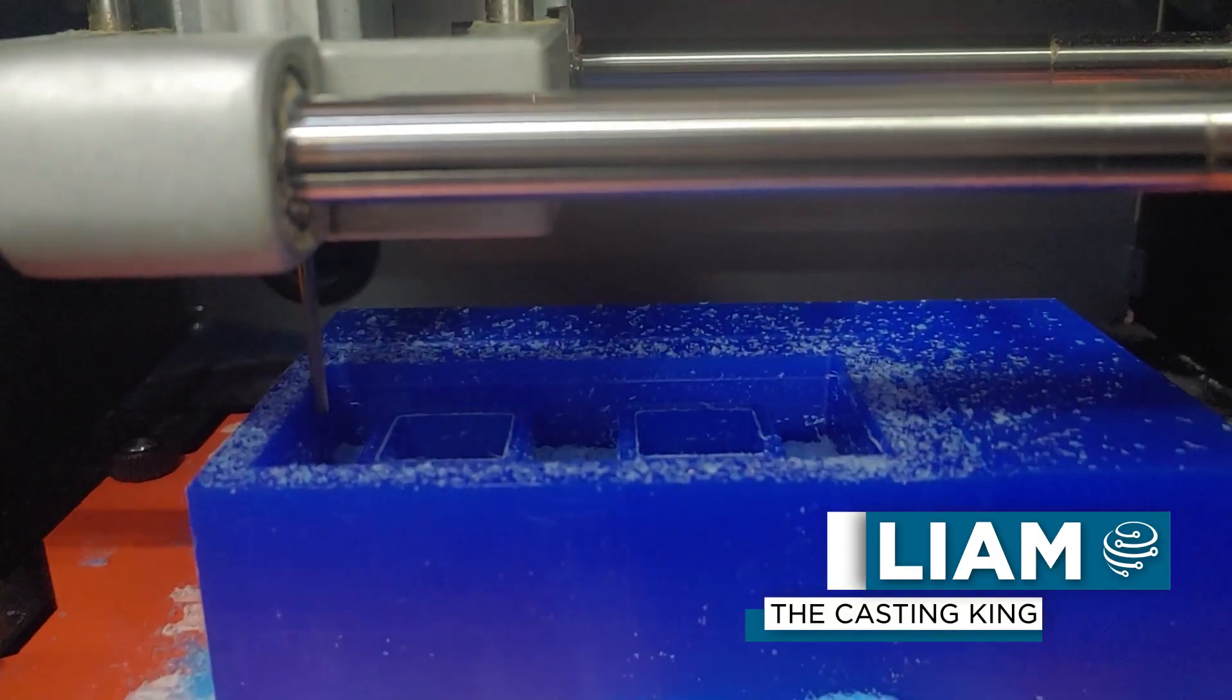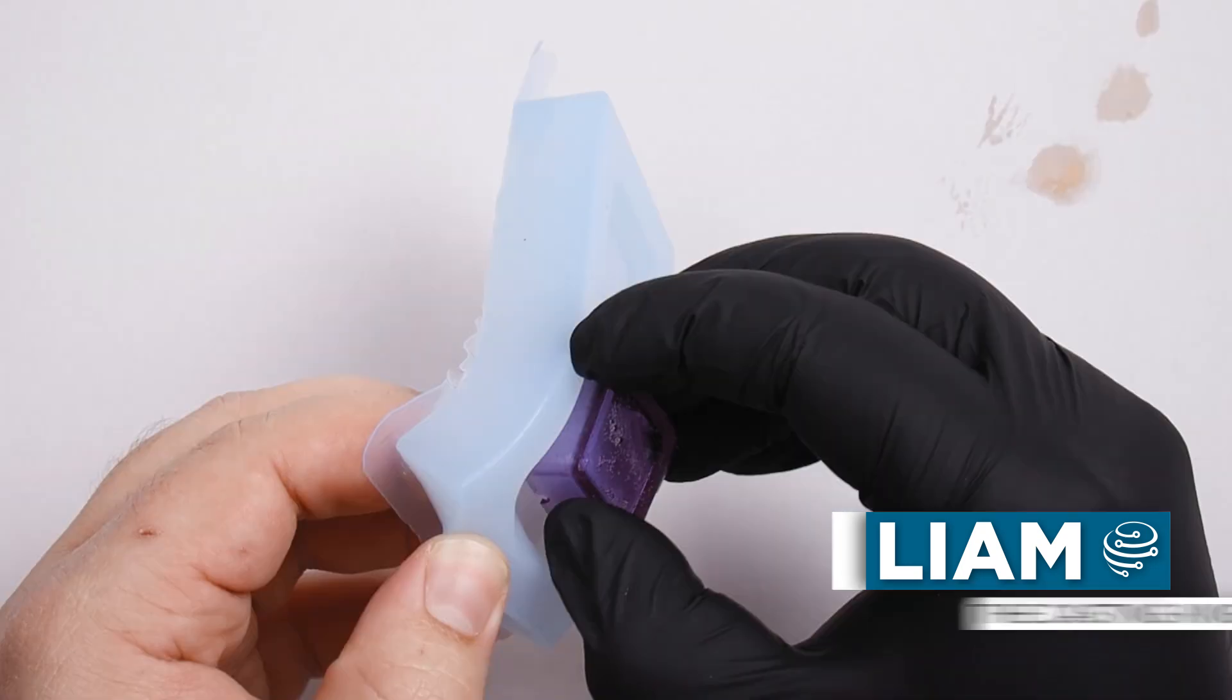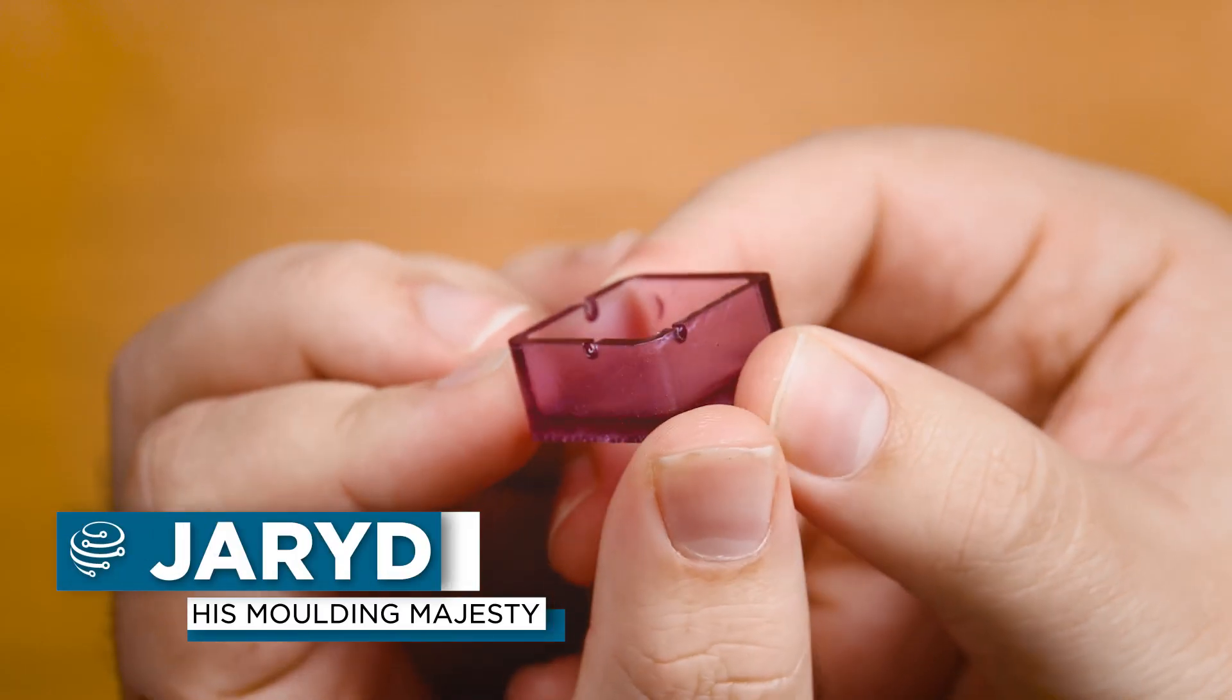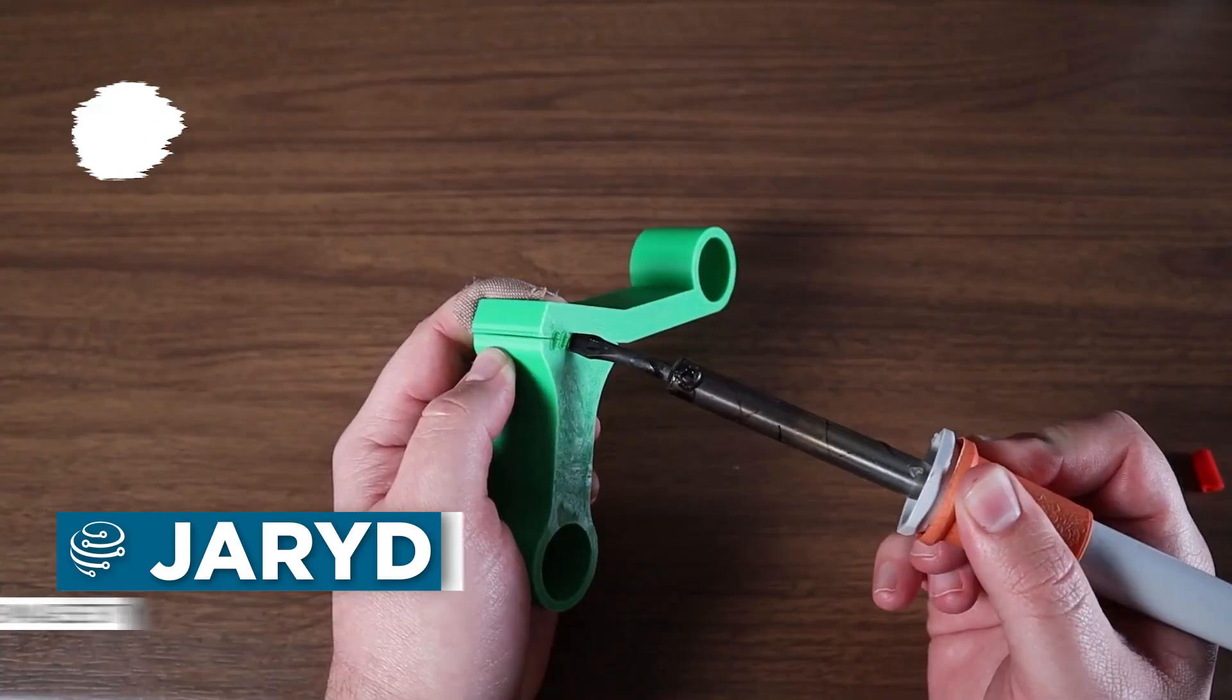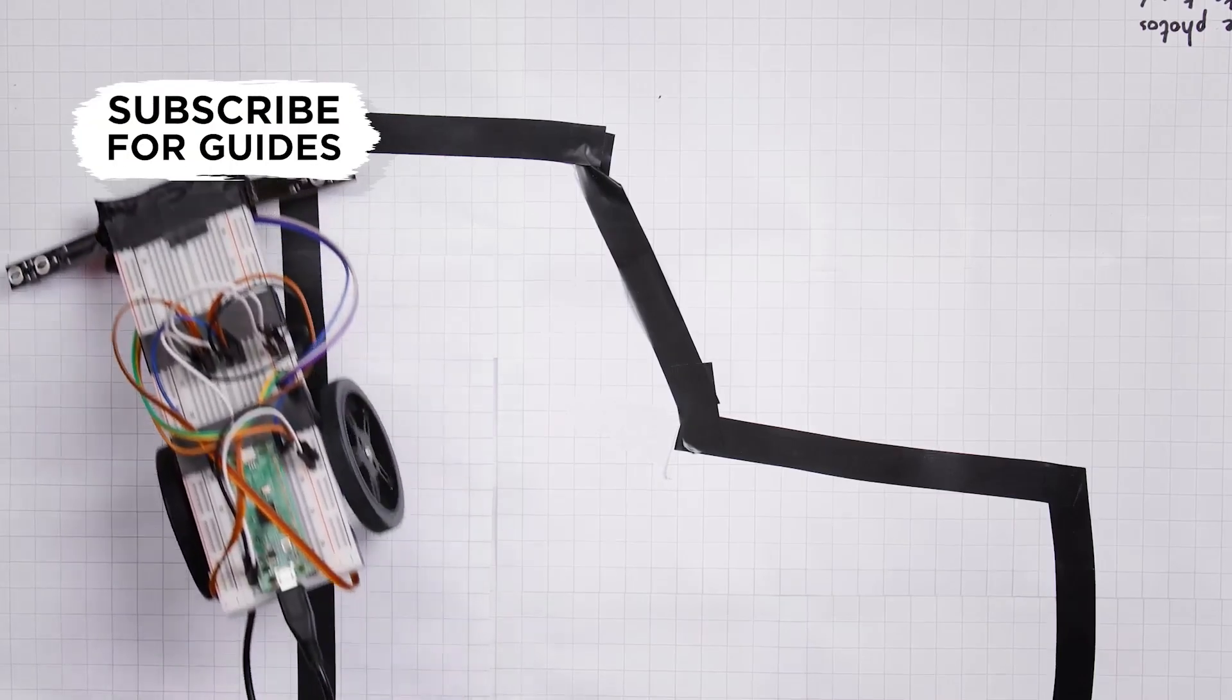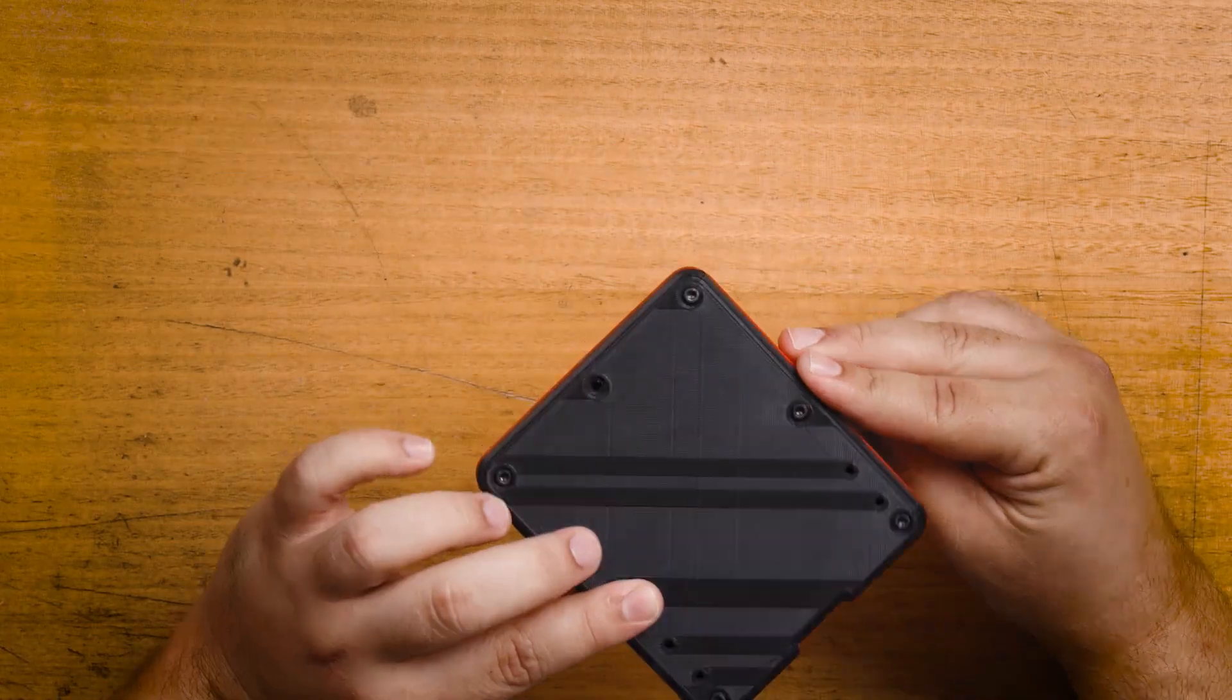In this chapter of the Zero2Maker workshop, we're looking at molding and casting, a creative way to make specialty parts for your project. If you're new to this workshop, we'll be taking you on a fast-paced and practical journey to learn a wide variety of maker skills so that you have the tools and knowledge to make anything. So follow along as we develop our own projects and share insights into the process.